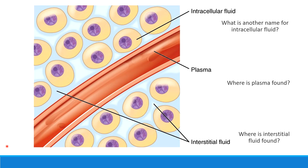In the body there are several different types of fluids. The first one labeled in our picture is intracellular fluid — intracellular means inside a cell. Intracellular fluid is the fluid we find inside the cell. My other name for intracellular fluid is what we saw earlier: it's called cytosol. Cytosol, the intracellular fluid, is the only fluid inside cells in our body.